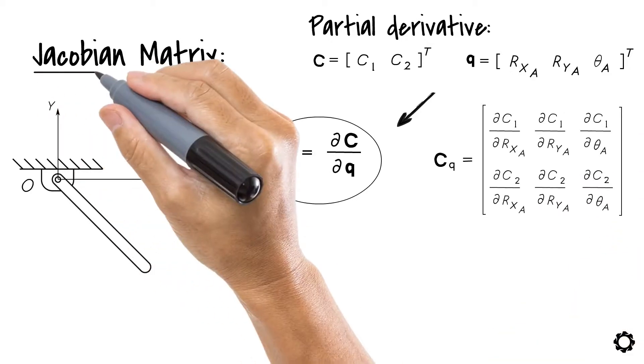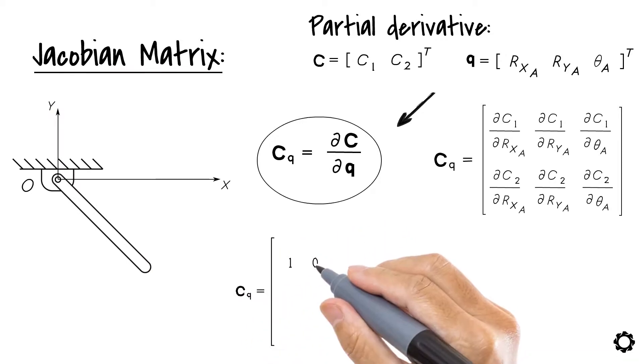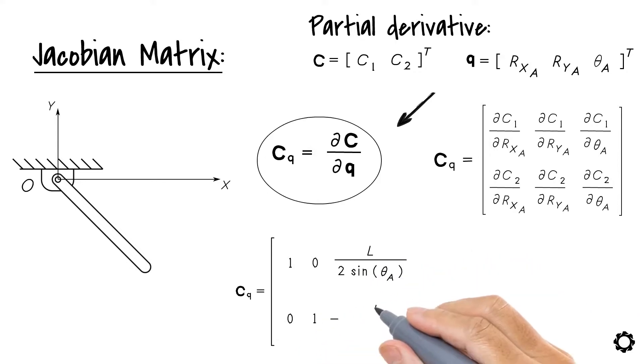Finally, the Jacobian matrix of our system is CQ equals 1, 0, L by 2 sin theta A, 0, 1, minus L by 2 cos theta A.